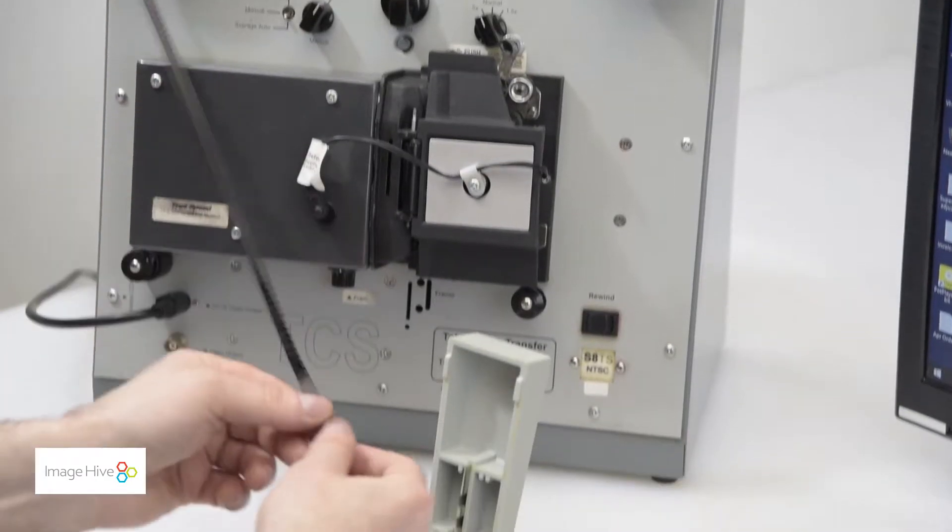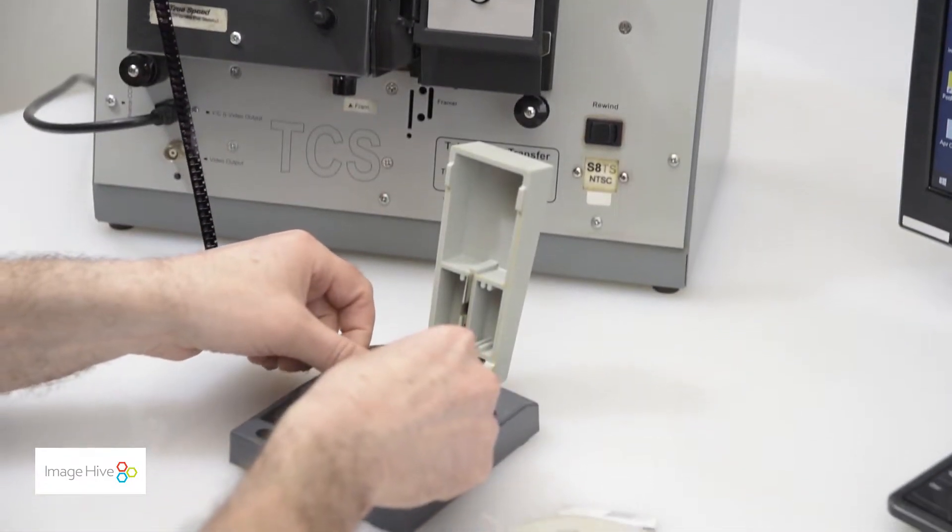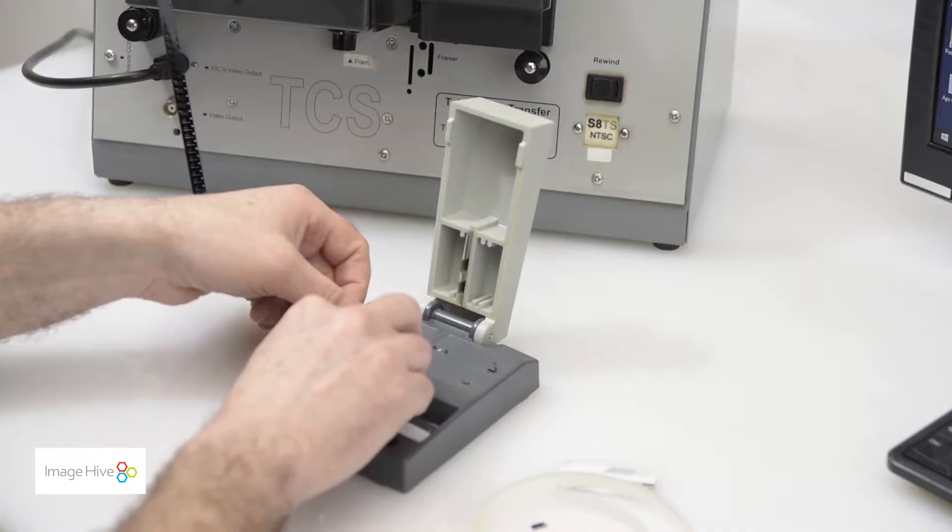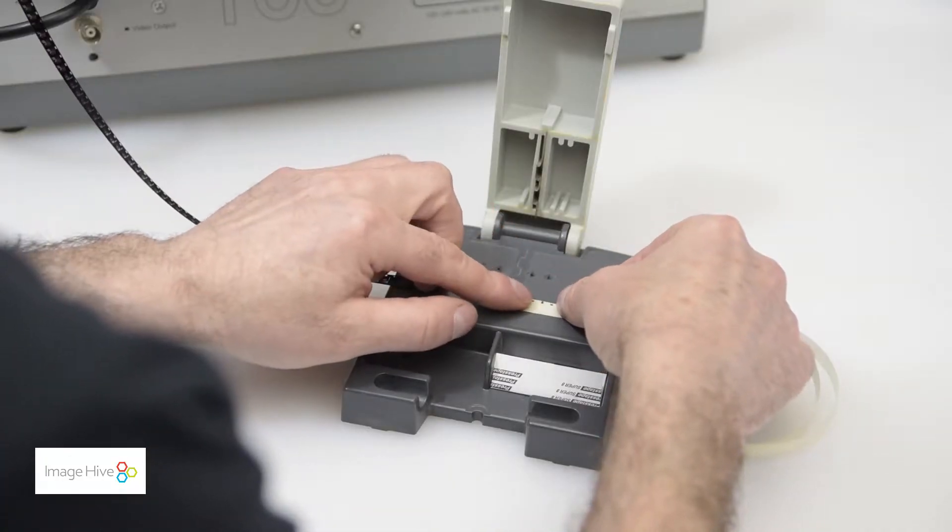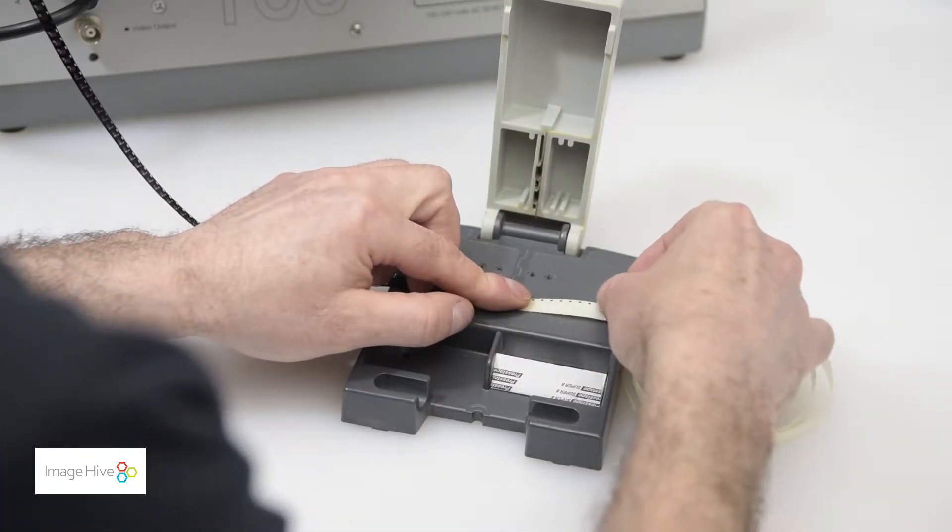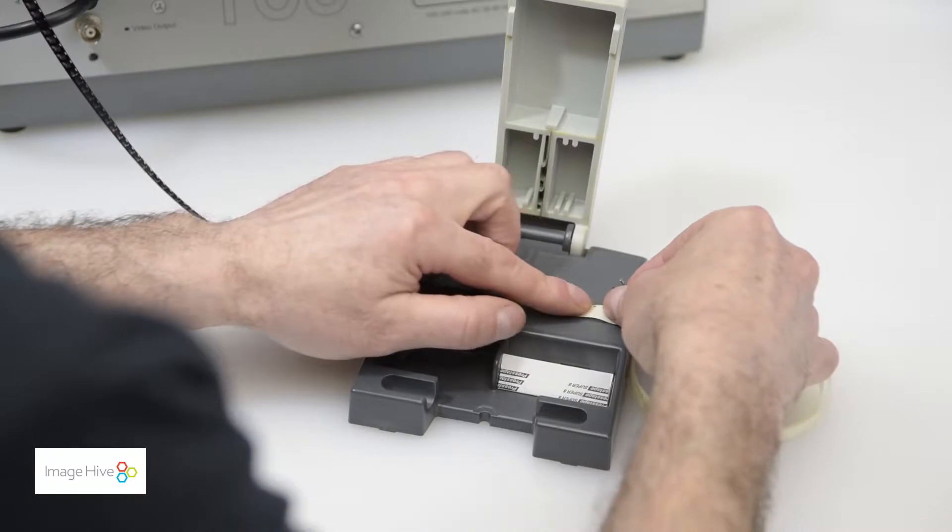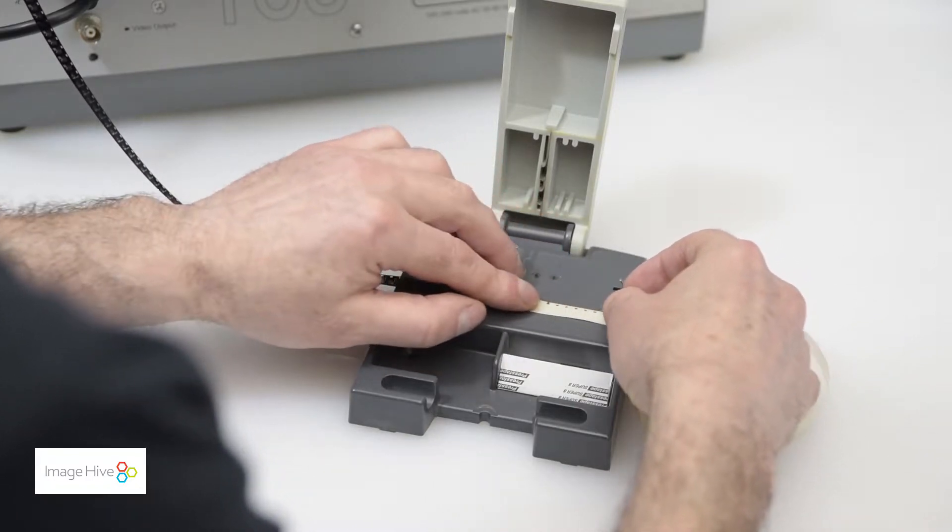First, we'll need to splice some of the film segments. Some film comes to us damaged or with a botched attempt at splicing. We can fix this by placing the damaged segment onto the splicer. The perforations on the film should line up perfectly with the notches on the splicer.